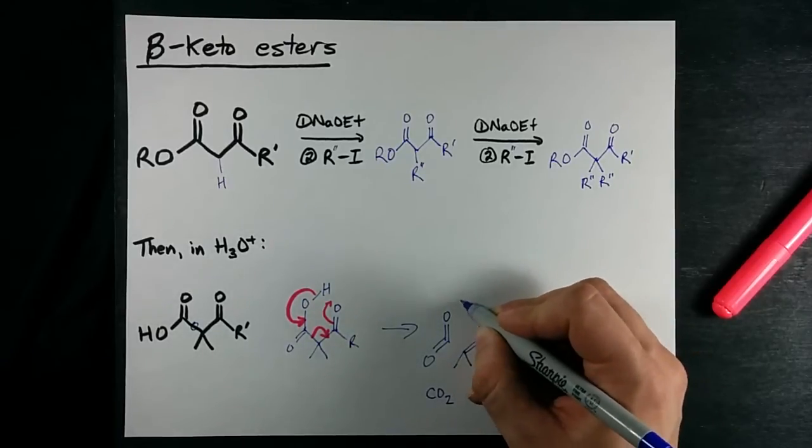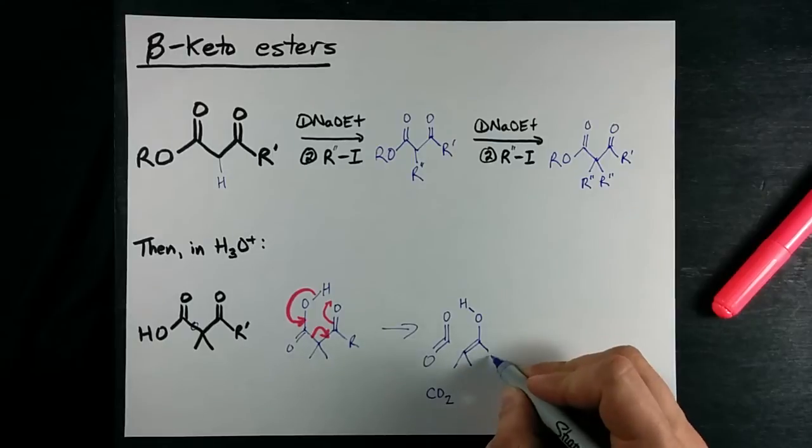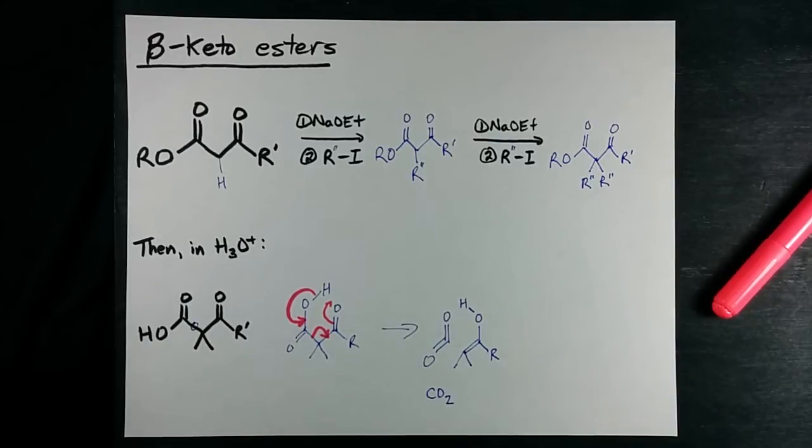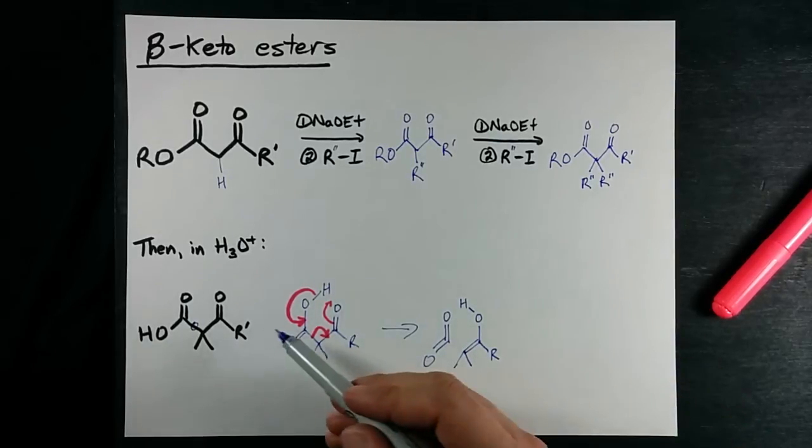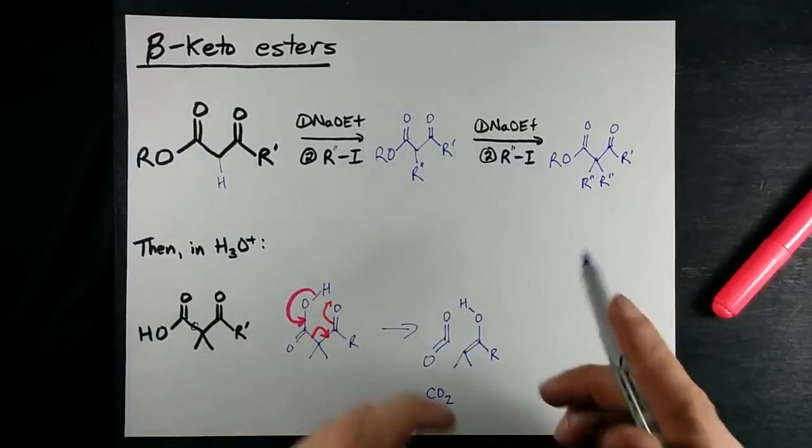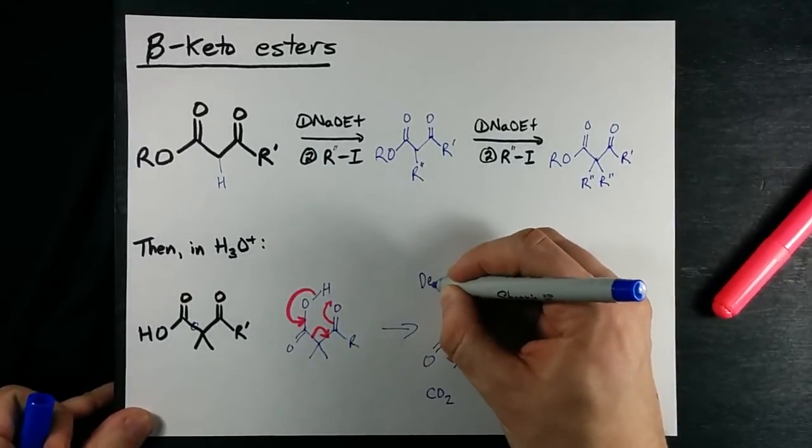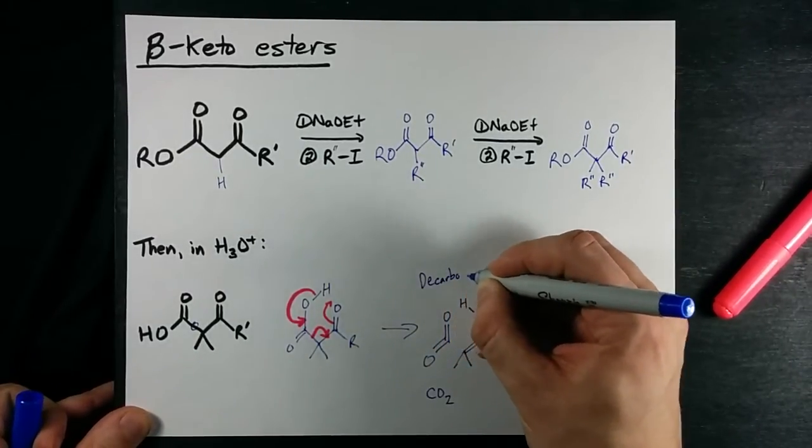Single bond to the O which is now single bonded to the H, and we still have our R group. So we've broken this molecule into two separate molecules. This is called decarboxylation.